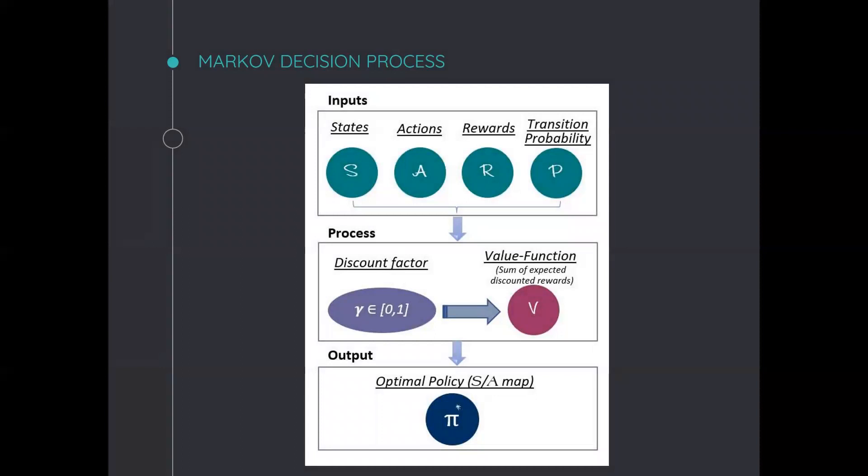Markov Decision Process consists of a state space S, an action space A, a transition probability model P, and a reward function R, which are the inputs of an MDP. And for its process, it's considered a discounted factor lambda, and it aims to maximize the expected sum of discounted rewards according to the value function V. And that's to compute the optimal policy P star.